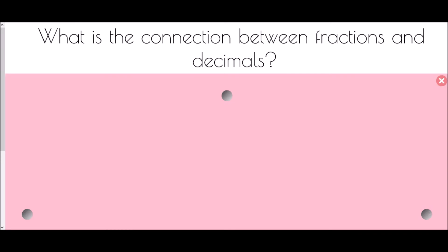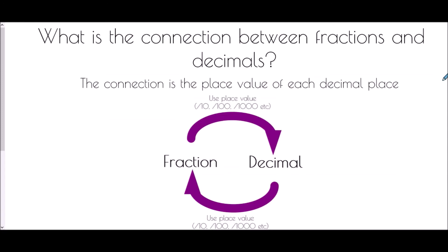Now we look at the connection between fractions and decimals, which comes down to place value. To turn a fraction into a decimal, use place value — tenths, hundredths, thousandths, etc. To turn a decimal into a fraction, identify whether you are dealing with tenths, hundredths, thousandths, and so on.